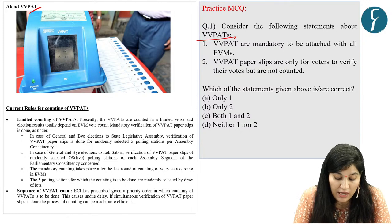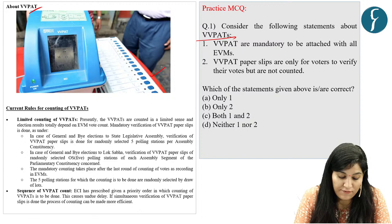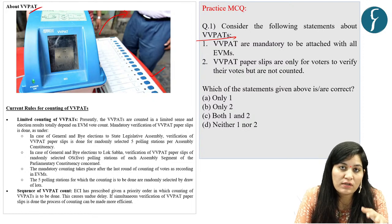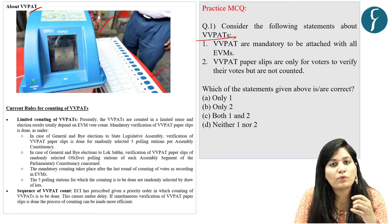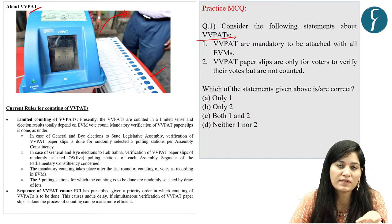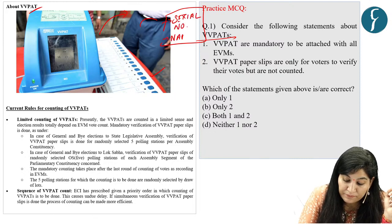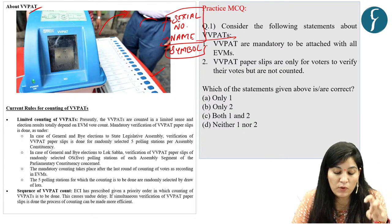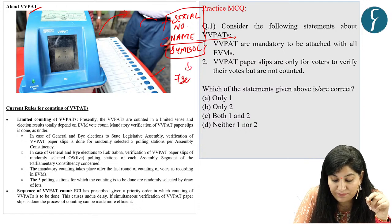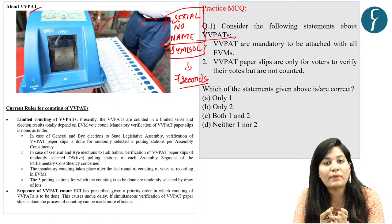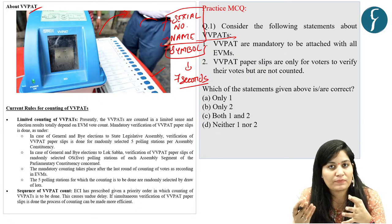As you can see in this image, VVPAT is an independent system attached with EVM — the electronic voting machine. This system allows voters to verify their vote and confirm that their votes are cast as intended. Once the vote is cast, a slip is printed that contains the serial number, name and symbol of the candidate, and that is exposed to a transparent window for 7 seconds. After that, this printed slip automatically cuts and falls into a sealed VVPAT box.